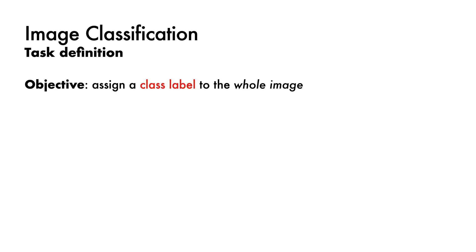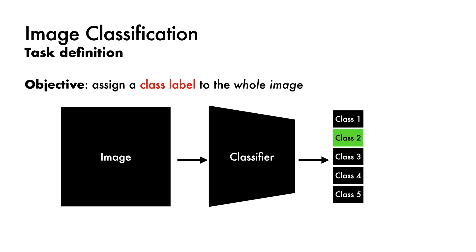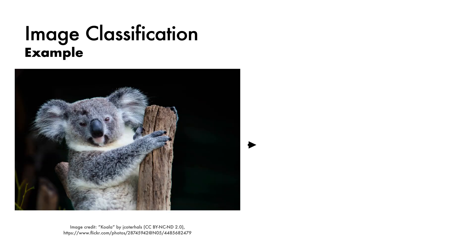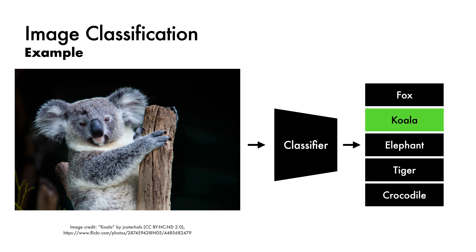I'll begin with image classification. The objective is to assign what we call a class label to the whole of an image. The model estimates which class the image belongs to — in this case highlighted in green. The classes are defined by you — simply a finite list of discrete categories that you have decided your classifier should care about. For example, given this image and a classifier model trained to recognise animals, the job of the classifier is to tell us that this image contains a koala and not a fox, elephant, tiger, or crocodile.